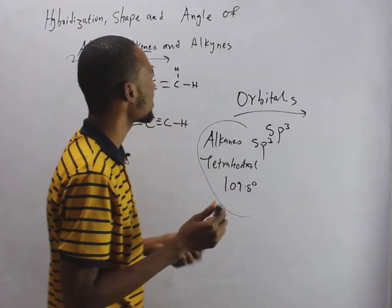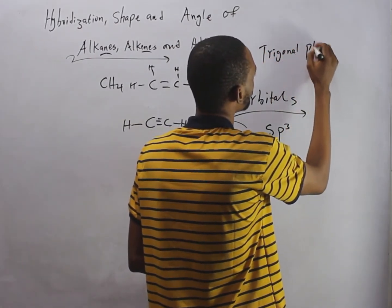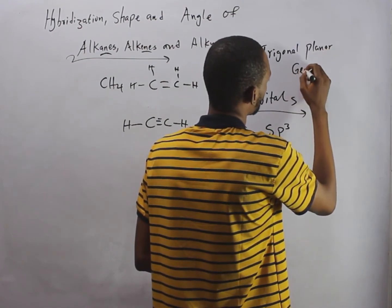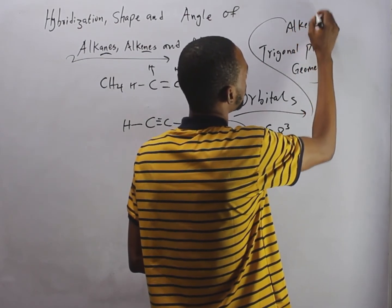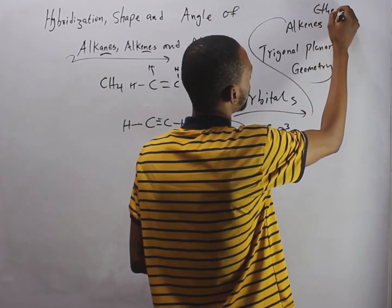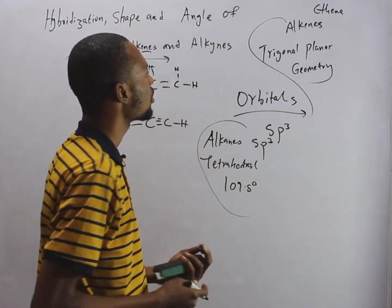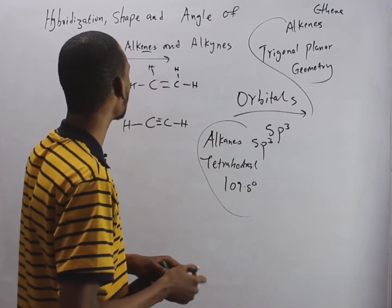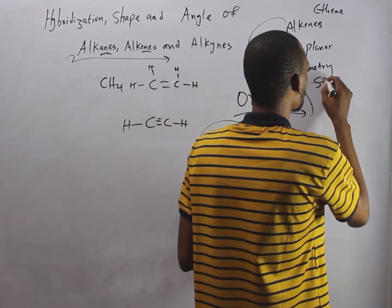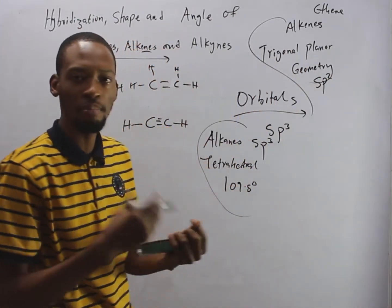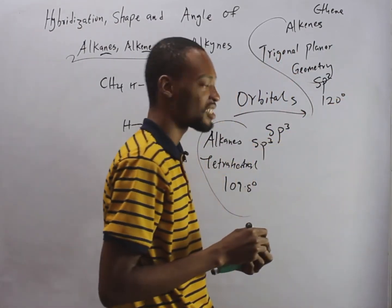Now, how about alkenes? Alkenes have trigonal planar geometry — that is their shape. The hybridization is SP2, and their bond angle is 120 degrees.